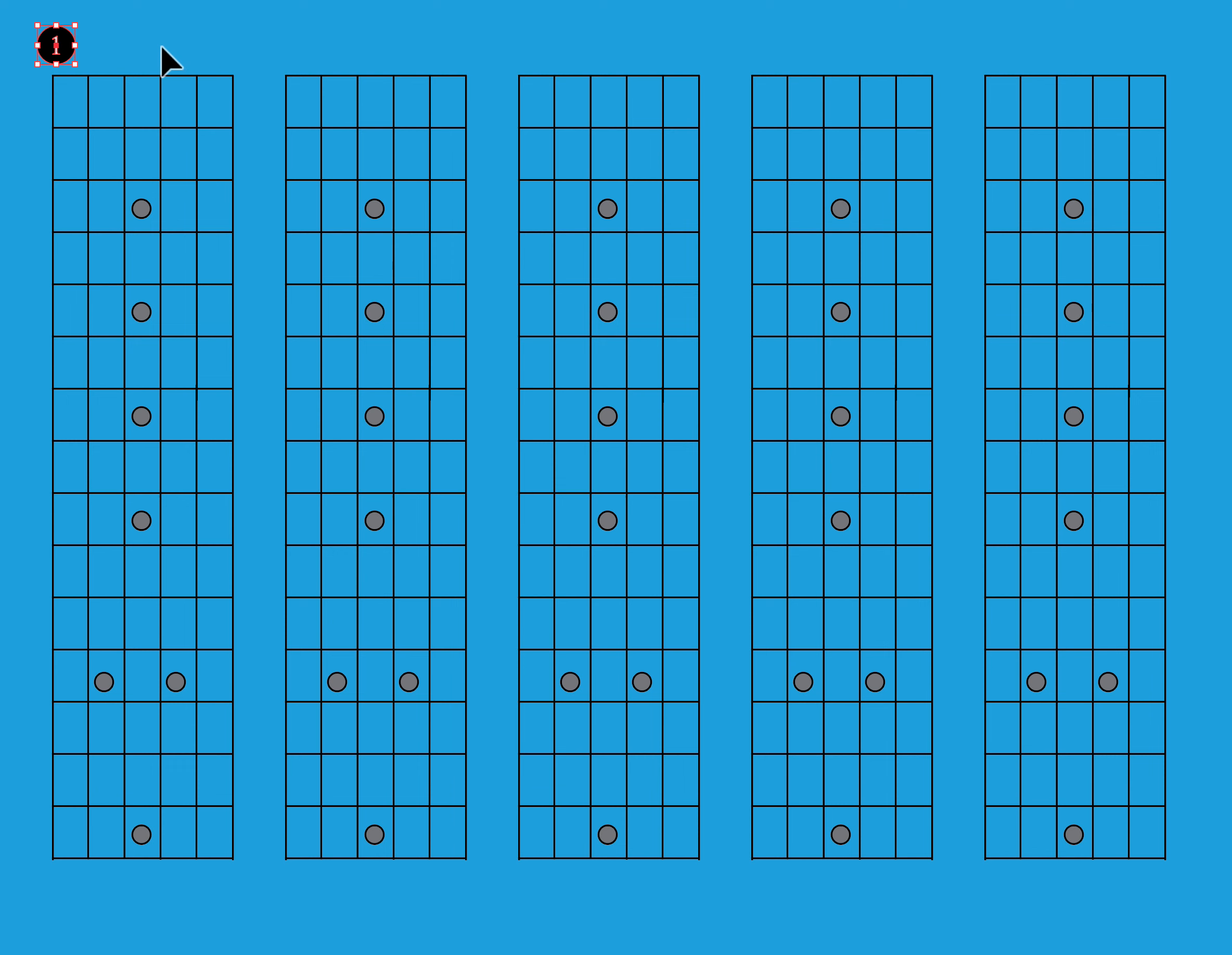Now when it comes to scale degrees, we have names for them. If this were the one, the two would be right here. The interval name is called the major second. For now we're just going to call it the two. And then the flatted two would be the note that's in between it. So one to a flatted two is a half step.